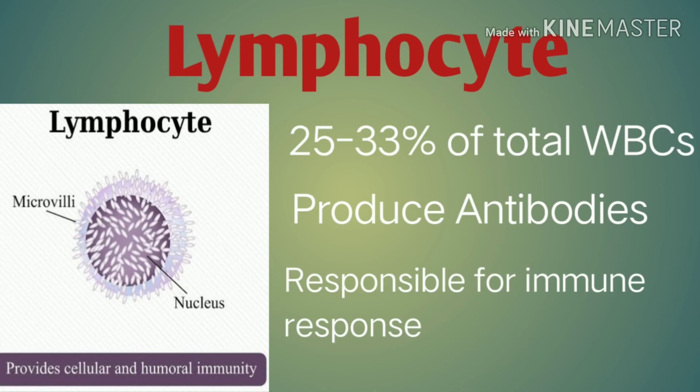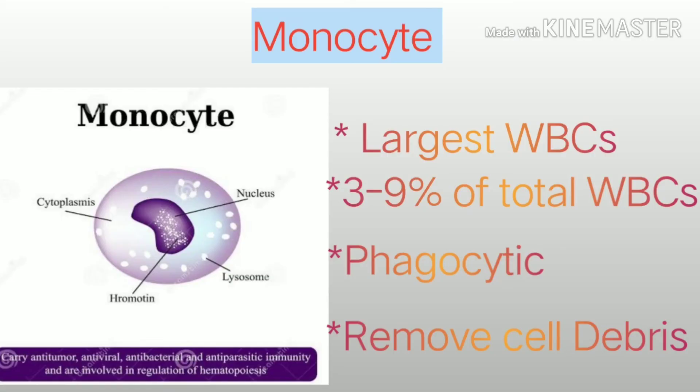Monocytes are the largest among the five types of WBCs, making up 3 to 9 percent of agranulocytes. They are phagocytic and remove cell debris from the body. Monocytes carry anti-tumor, anti-viral, antibacterial, and anti-parasitic immunity, and are involved in the regulation of hematopoiesis.